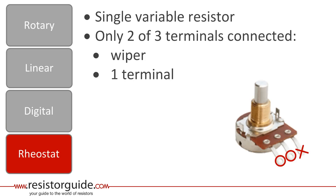The fourth category is the rheostat. Basically, it is a single variable resistor. If we take a potentiometer, and we connect only the wiper and one of the other terminals, we create a rheostat.